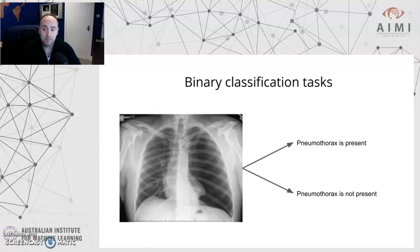What is a binary classification task? It's essentially any task where a decision is either yes or no — there are only two possible answers. So in a chest X-ray pneumothorax detection algorithm, the binary task might be: pneumothorax is present, or pneumothorax is not present. And here, clearly, it is present.